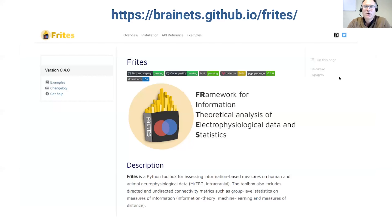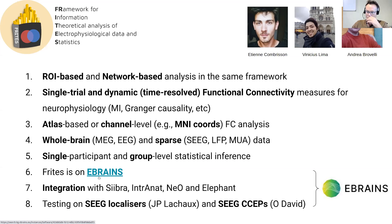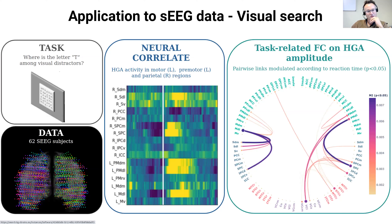This software allows analysis both at the ROI level, and we are working on integration with Zebra for atlas-based and network-based analysis in the same framework. It allows analysis of single-trial and time-resolved functional connectivity using different measures, such as standard undirected mutual information or Granger causality. It supports atlas-based or channel-level analysis for whole-brain data such as MEG as well as sparse data, and works at both single-participant and group level. We are finishing the integration process into eBrains, and are now testing the tool on intracranial EEG data from Jean-Philippe Lachaud, which is on eBrains.